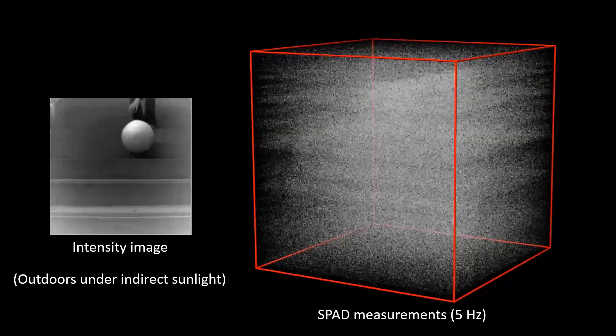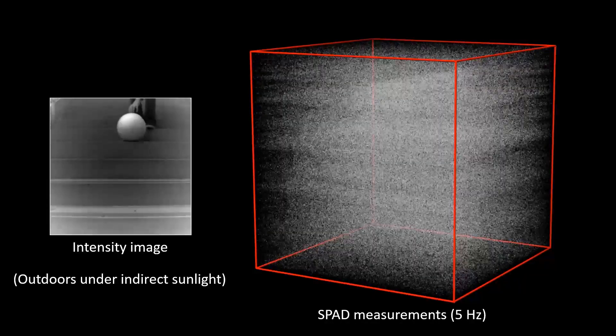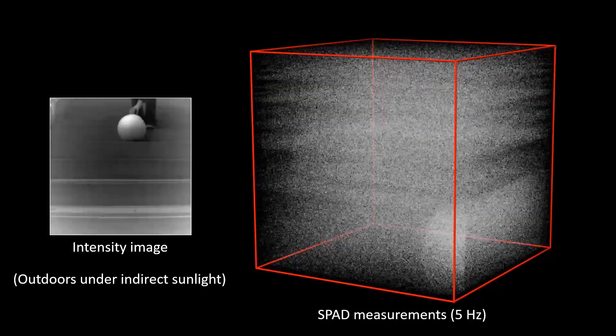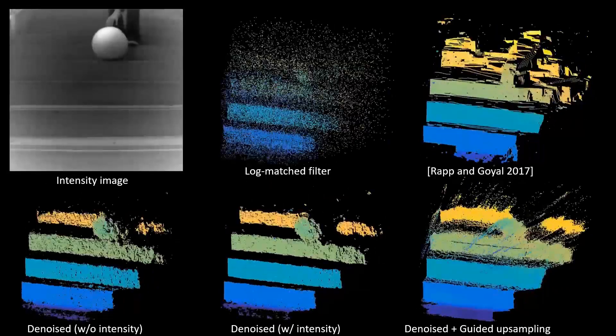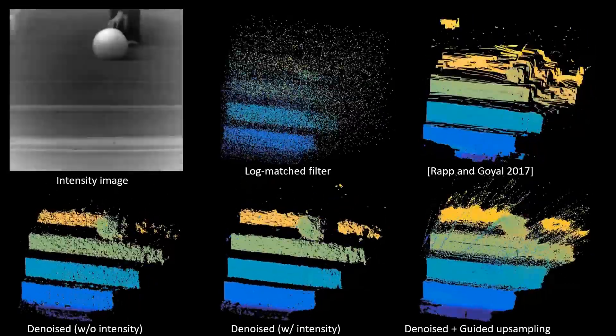Here is another example of a ball rolling down a set of steps. Once again, our CNN architecture demonstrates the capability of 3D sensing under extreme low signal conditions.